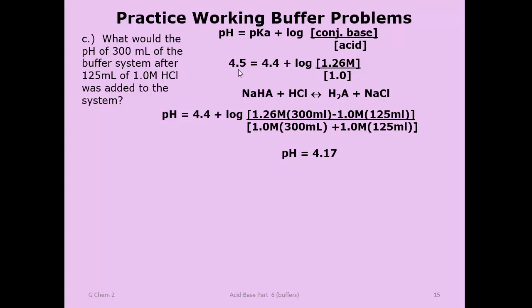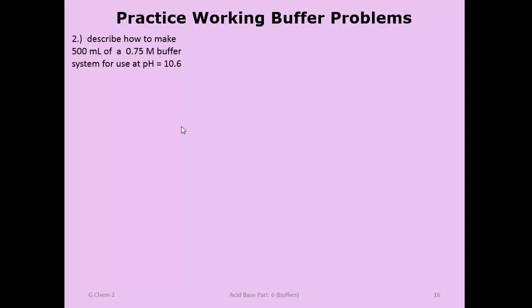If attacking the buffer with a base, the pH should be rising—do similar calculations. Now the final question: how do you make a basic buffer at pH 10.6? Go back to the table, which is laid out in Ka values. A pH of 10.6 gives a pOH of 3.4. Converting back to a matching Kb by raising 10 to the negative 3.4 power gives Kb = 3.9×10⁻⁴—that's the Kb to look for in the table.